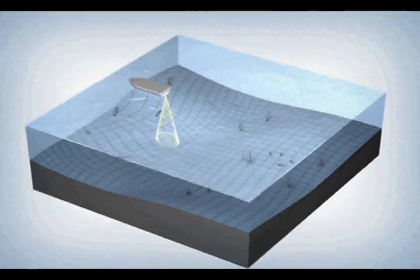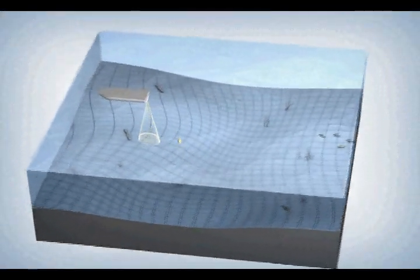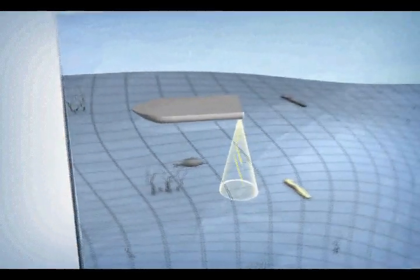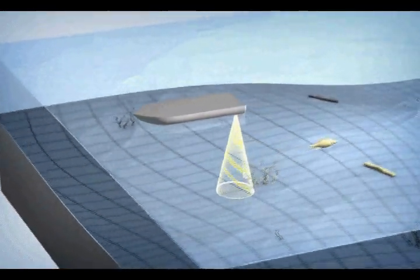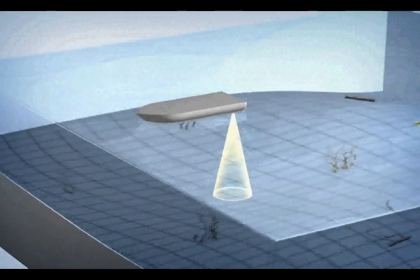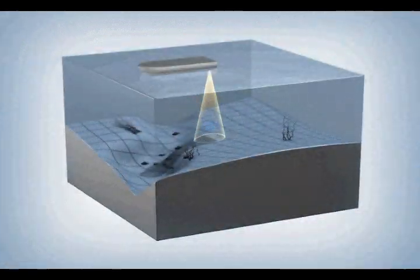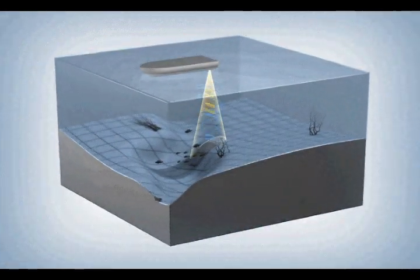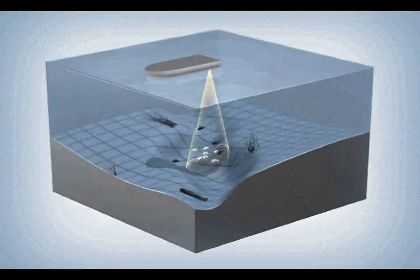An acoustic signal is sent from the transducer down through the water column. When this signal comes into contact with fish, structure, and the bottom surface, it's reflected back toward the transducer. Your Humminbird picks up this return signal and converts it into the information displayed on your screen.